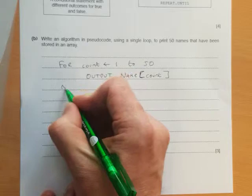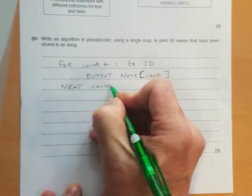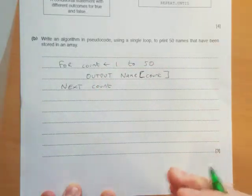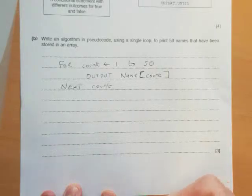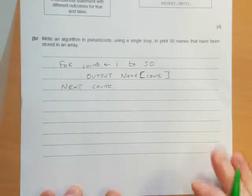But remember, with a for loop, we need to add 'next count'. Okay, so that's the way I would solve it. The mark scheme has a different solution. They're using a while loop, which will do exactly the same thing, but you get more lines of code.